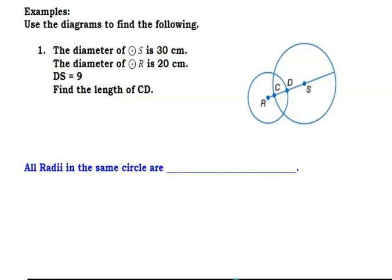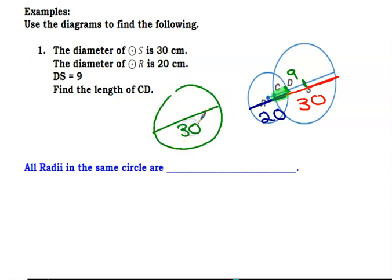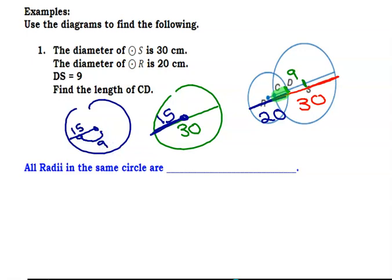So the diameter of S — this whole thing right here — is 30, and the diameter of the r circle is 20. DS, this little section, is 9. We need to find what CD is — this little tiny chunk. So if the whole diameter is 30, and two radii equal one diameter, I cut that in half: the radius is 15. If that radius is 15 and this little section DS is 9, I subtract: 15 minus 9 equals 6. So CD equals 6 centimeters.